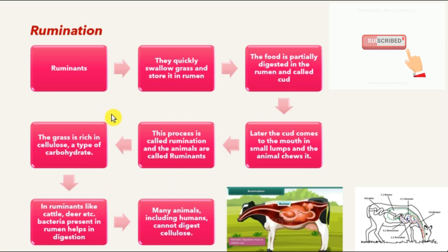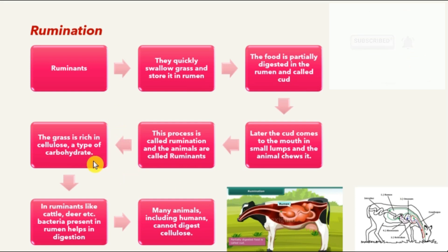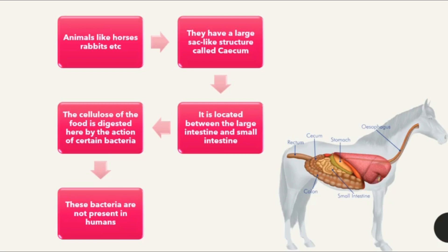What is so special in the rumen that allows them to digest cellulose? Grass is rich in cellulose, which is a type of carbohydrate. In ruminants like cattle and deer, bacteria are present in the rumen which help in digestion. Many animals, including humans, cannot digest cellulose, so cattle and deer are only able to digest it due to the presence of bacteria in the rumen.